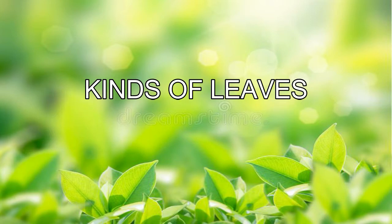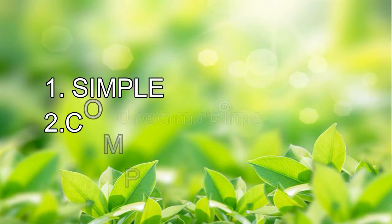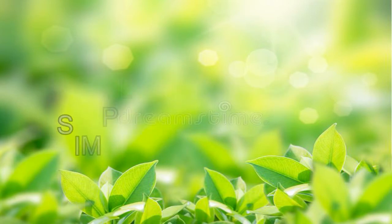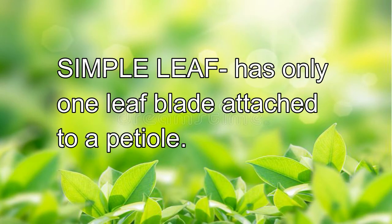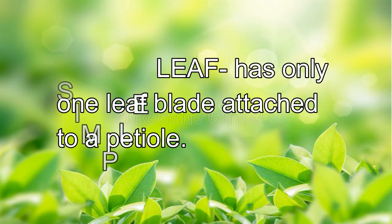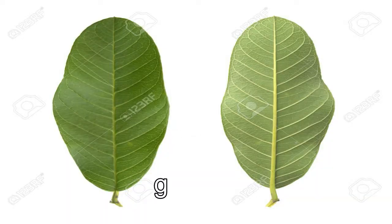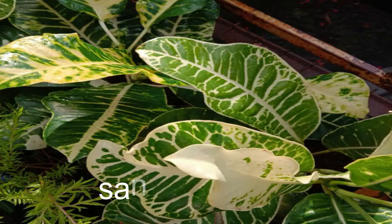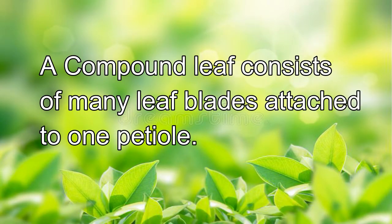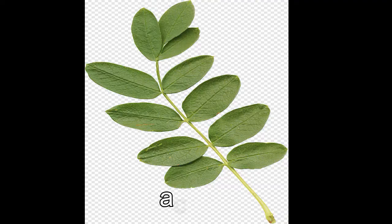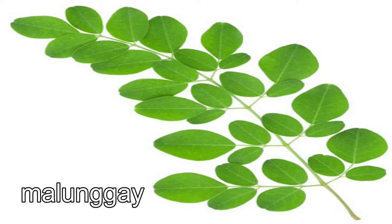Kinds of leaves: leaves may be simple or compound. A simple leaf has only one leaf blade attached to a petiole. Examples are the guava and san francisco leaves. A compound leaf consists of many leaf blades attached to one petiole. Examples are the acacia and malunggay leaves.